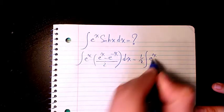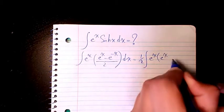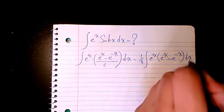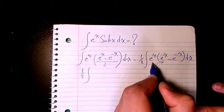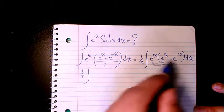and the remaining is going to be e to the power of x minus e to the power of negative x dx. Then I start distributing this one in here. e to the power of x times e to the power of x...